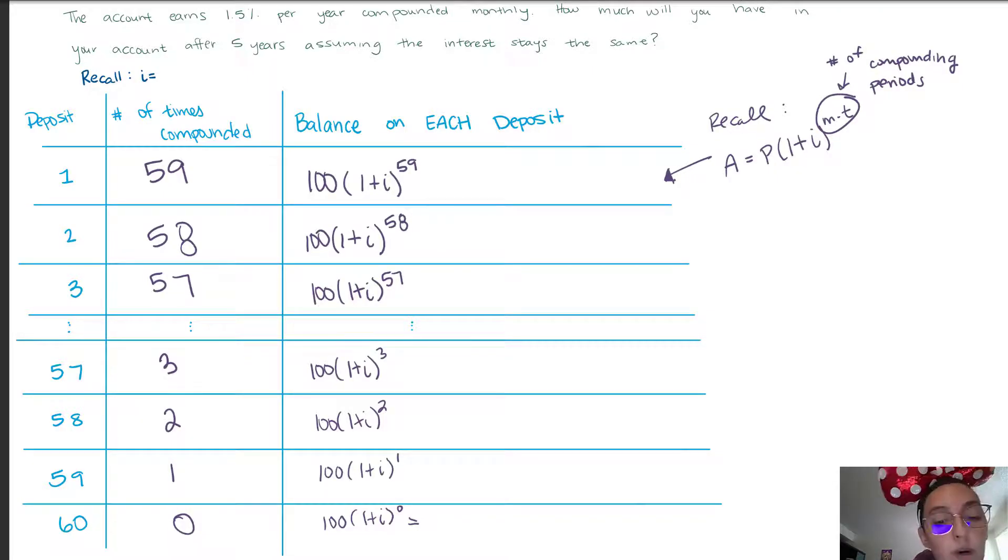For the 60th deposit, I'm going to simplify our term real quick. Anything to the zero power we have learned is equivalent to 1, so this is going to simplify to 100.